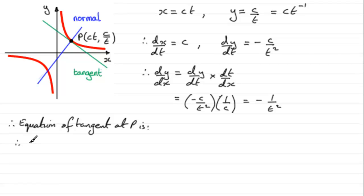And so therefore we'd have y minus y1, that would be c over t, equals m, the gradient, which is minus 1 over t squared. We'll put that in brackets, minus 1 over t squared. And we multiply this by x minus x1, x1 being ct.